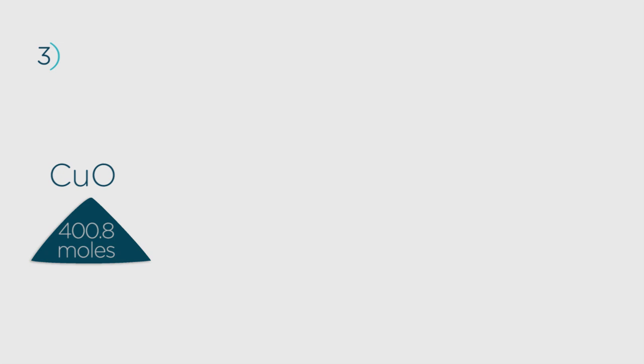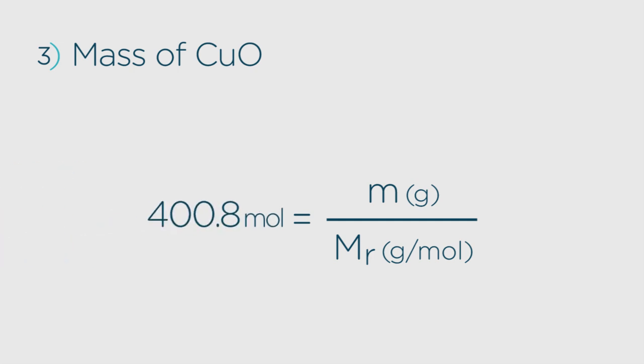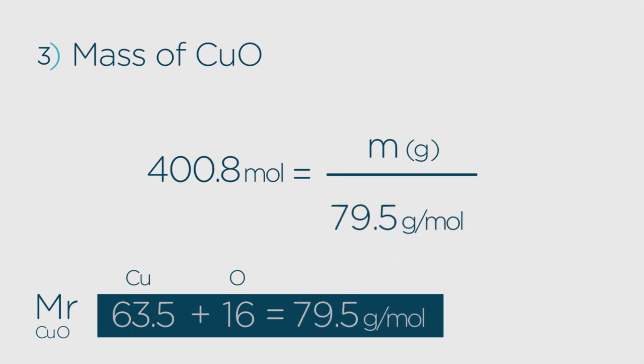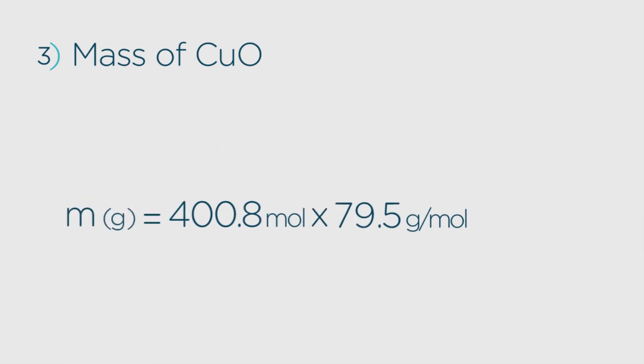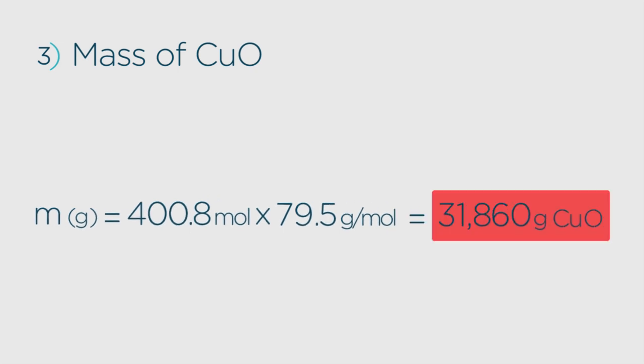Now to convert back to mass. And again, this is straightforward. We just have to use the equation again. This time we know the number of moles, 400.8, and we can get the molecular mass of copper oxide. 63.5 plus 16 equals 79.5 grams per mole. To find the mass, only a simple rearrangement is needed. 400.8 times 79.5 equals 31,860 grams of copper oxide.